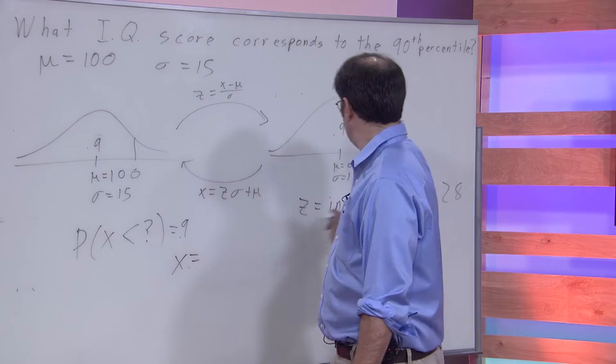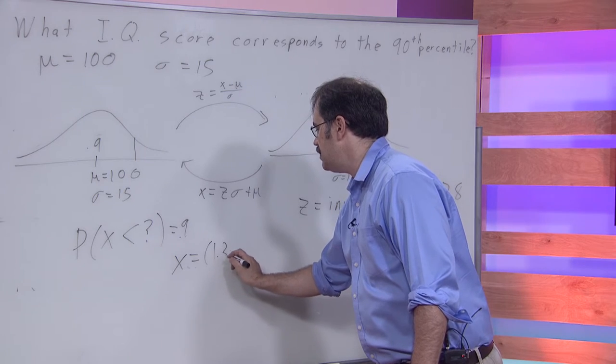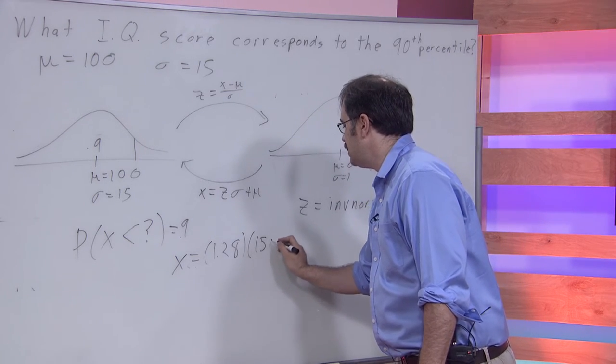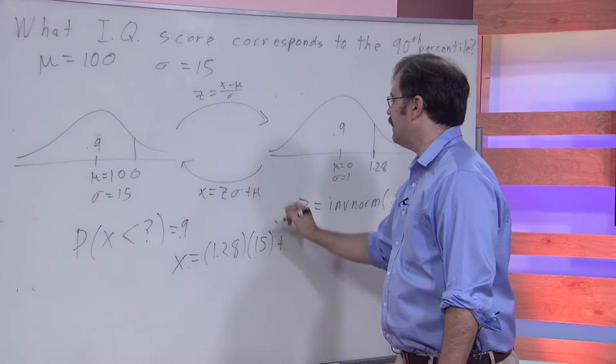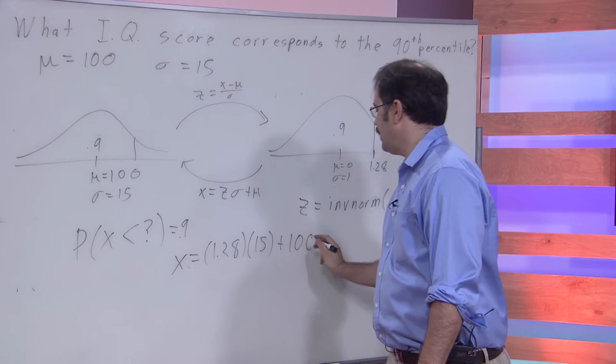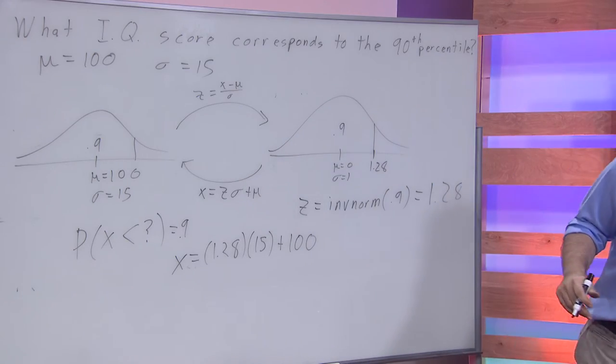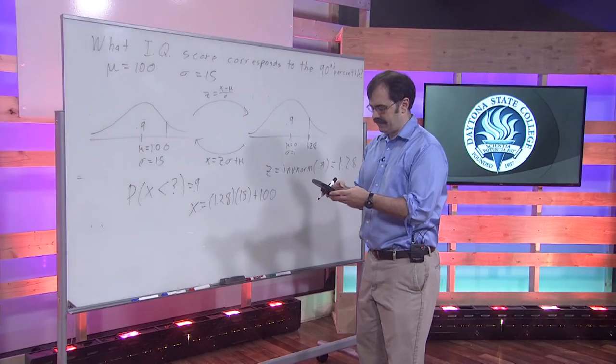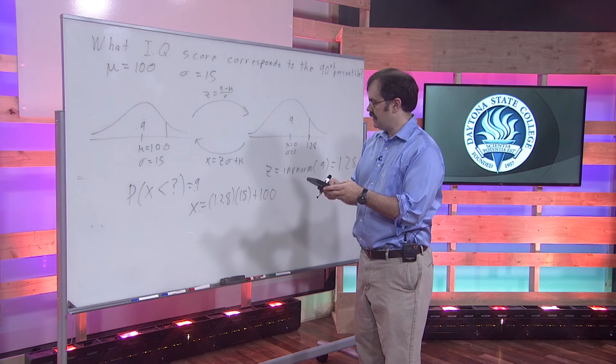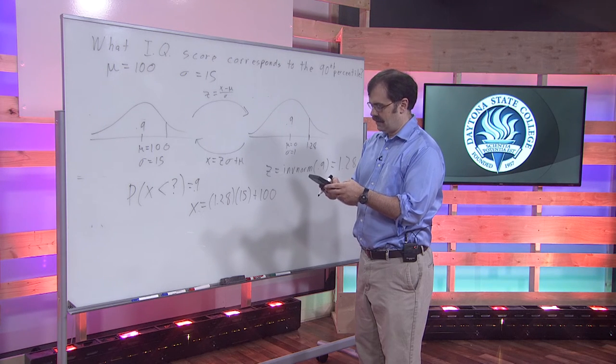1.28 times our sigma, which is 15, plus the mean, which we said was 100. And you just grab your calculator, and you plug that in, and you get 1.28 times 15, plus 100.